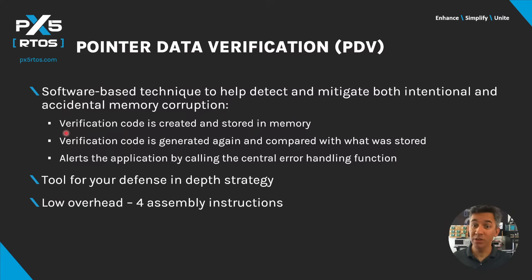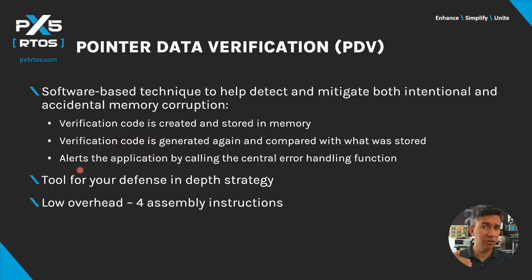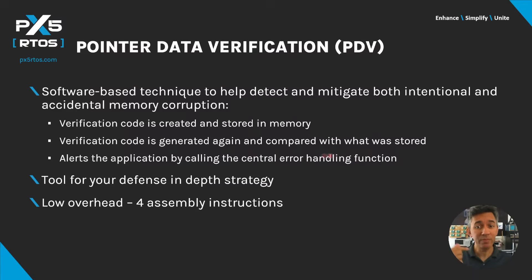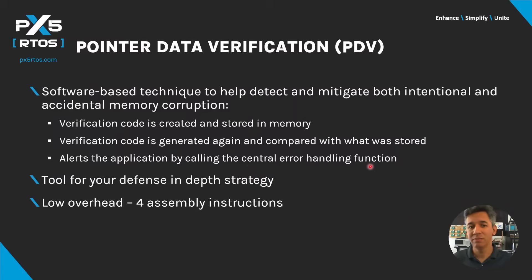It works like this: for important information, a verification code is created and stored in memory. Before the information is used, a verification code is generated again and compared with what was stored. If the code doesn't match, PDV alerts the application by calling the central error handling function. PDV is a great tool to add to your defense-in-depth strategy, with as few as four assembly instructions to run.